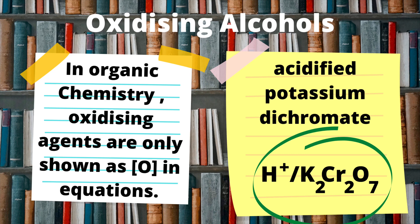We're going to be doing the oxidation of primary and secondary alcohols using specific reaction conditions and the oxidizing agent acidified potassium dichromate. The reaction conditions involve either using a distillation or a reflux — these are apparatus setups that you are expected to be able to draw, so let's have a close look at these setups.